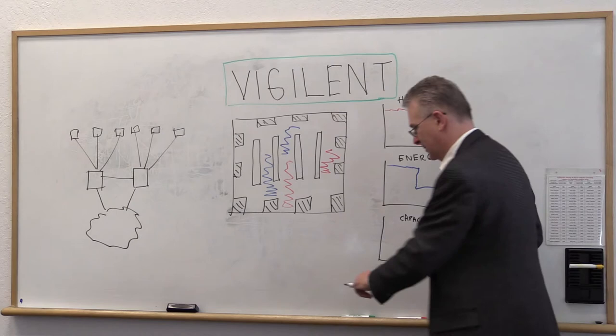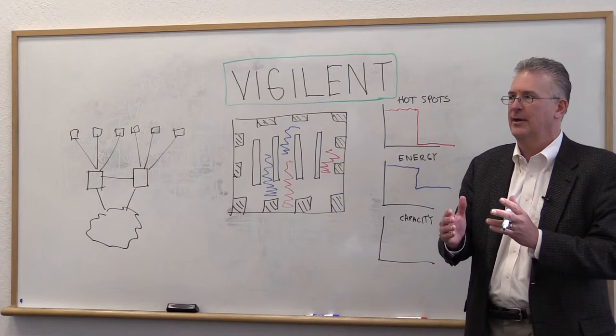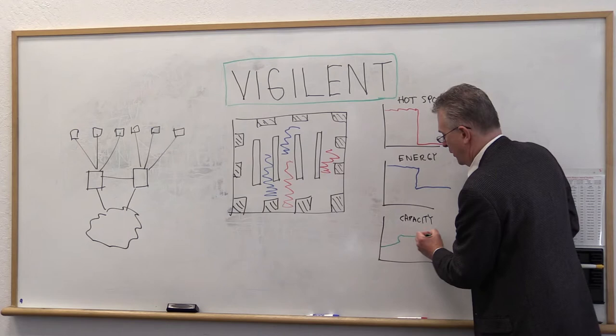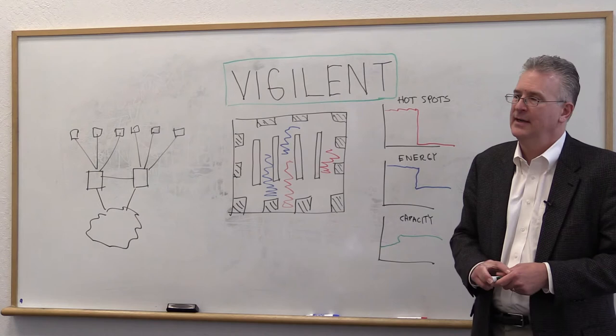Thirdly, cooling capacity, which gives you the ability to put more IT equipment in the room, typically goes up by about 10 or 15 percent. Those are the three benefits you get with Vigilant.